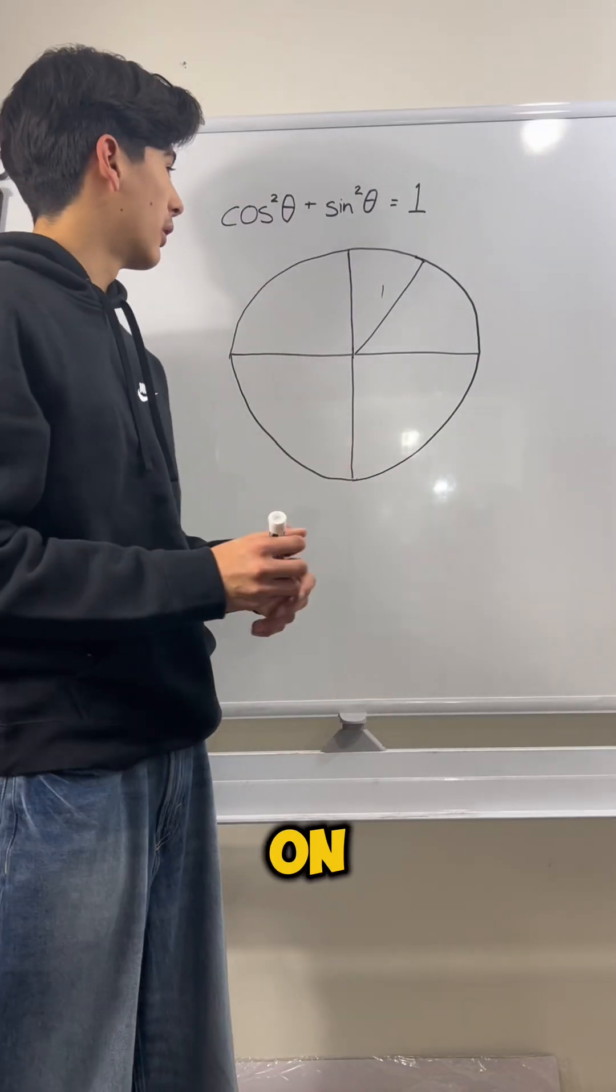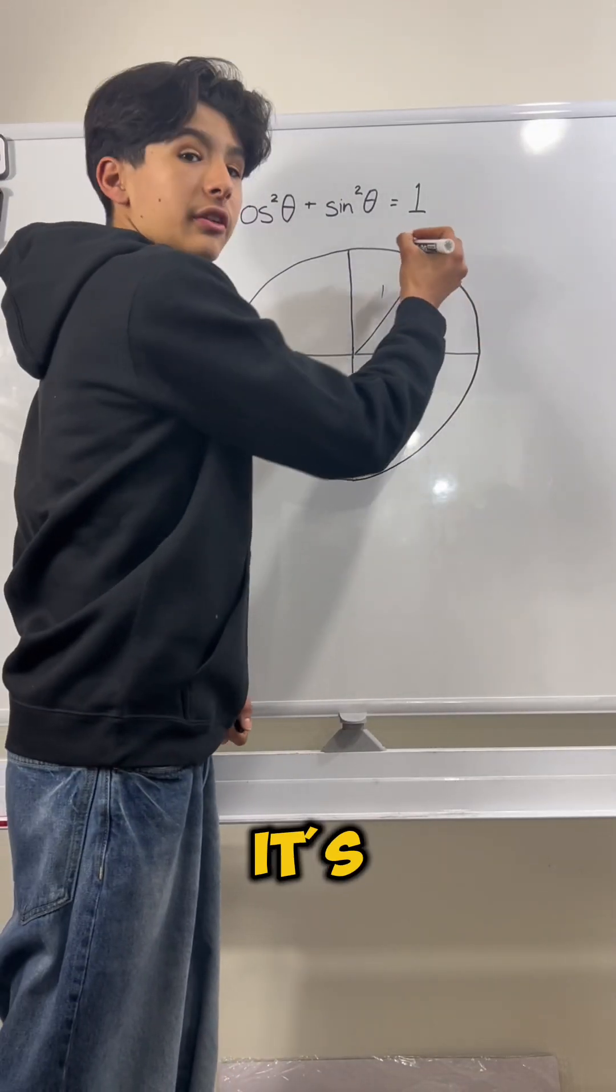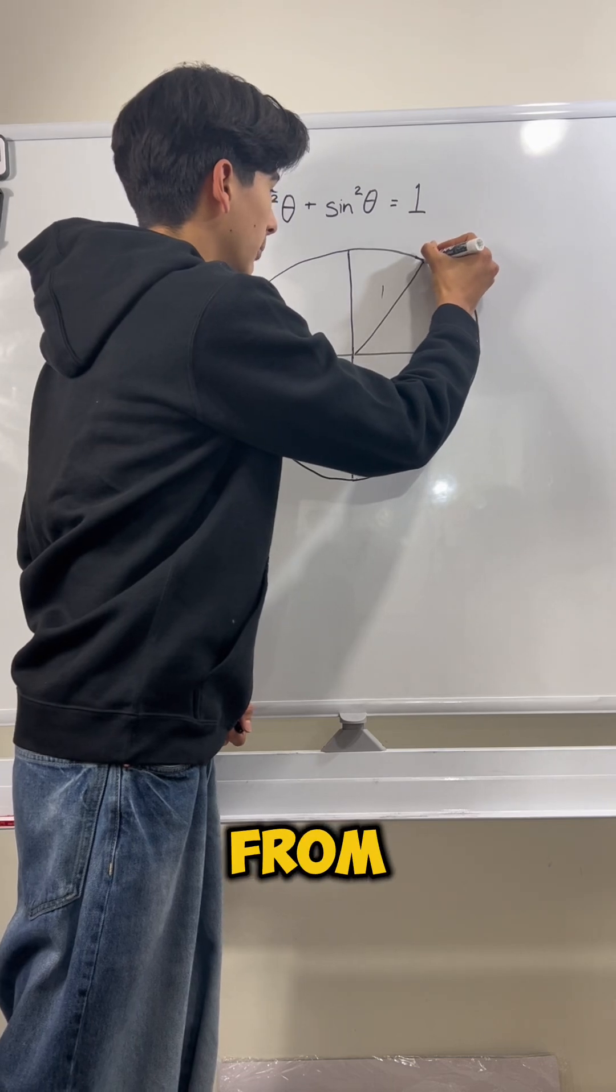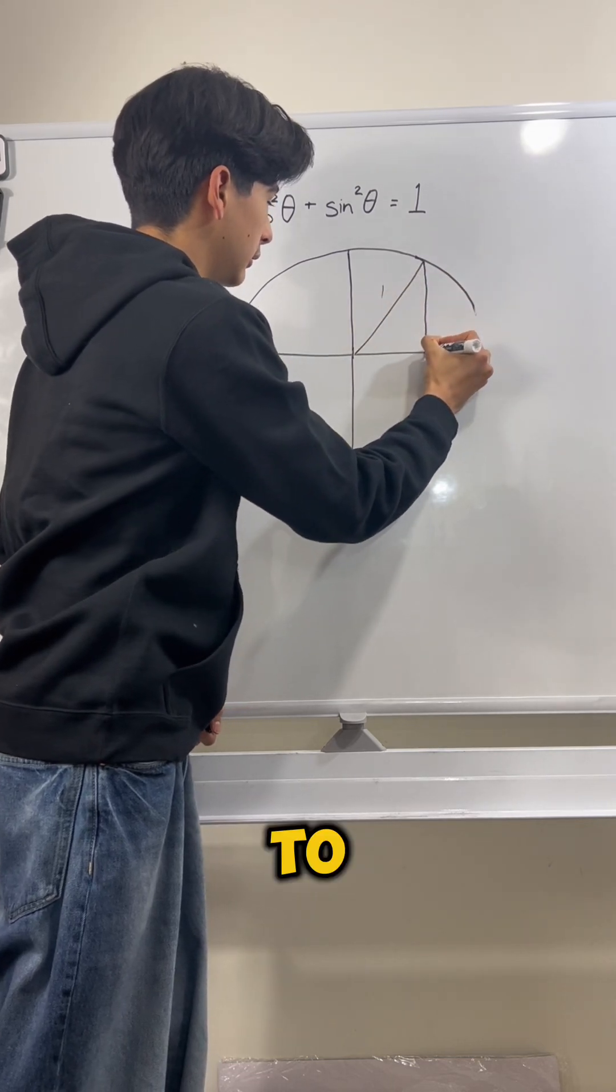I'm going to draw another line on this unit circle. And this time, it's not going to be a radius. It's going to be a line from this point to this point.